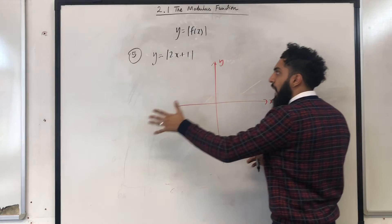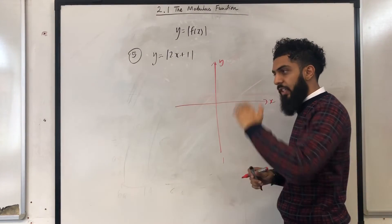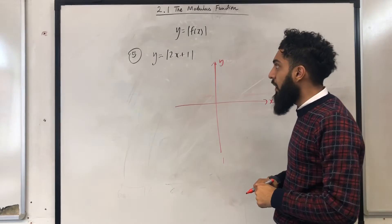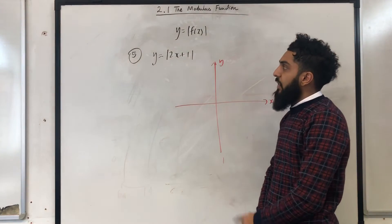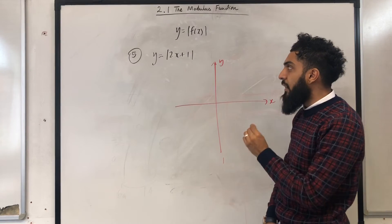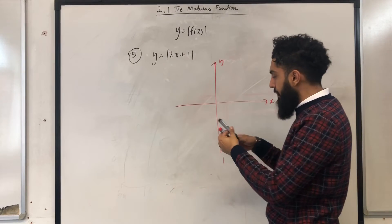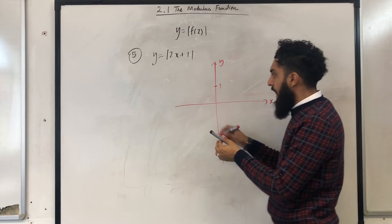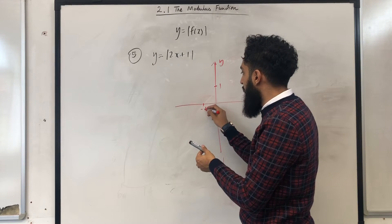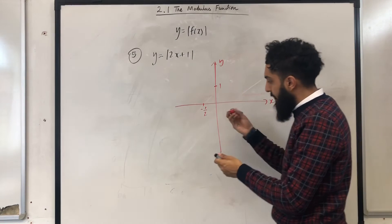Then I need to sketch y equal 2x plus 1. Y equal 2x plus 1 is just a straight line with positive gradient. The gradient is 2. The y intercept is 1 and the x intercept is minus 1 over 2. So let's label the intercepts. The y intercept is 1, the x intercept is minus 1 over 2. And now let's draw the line y equal to 2x plus 1.